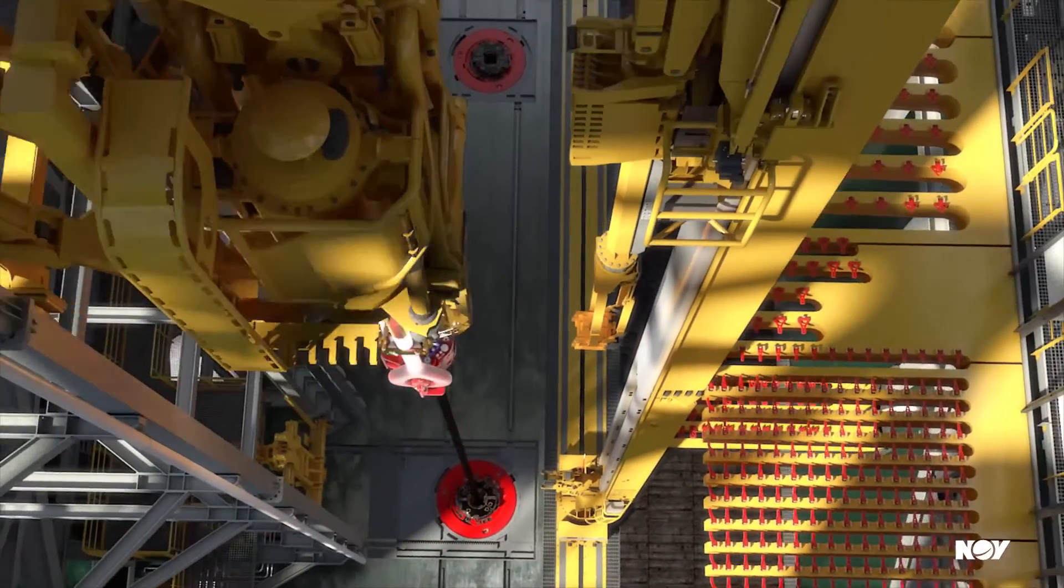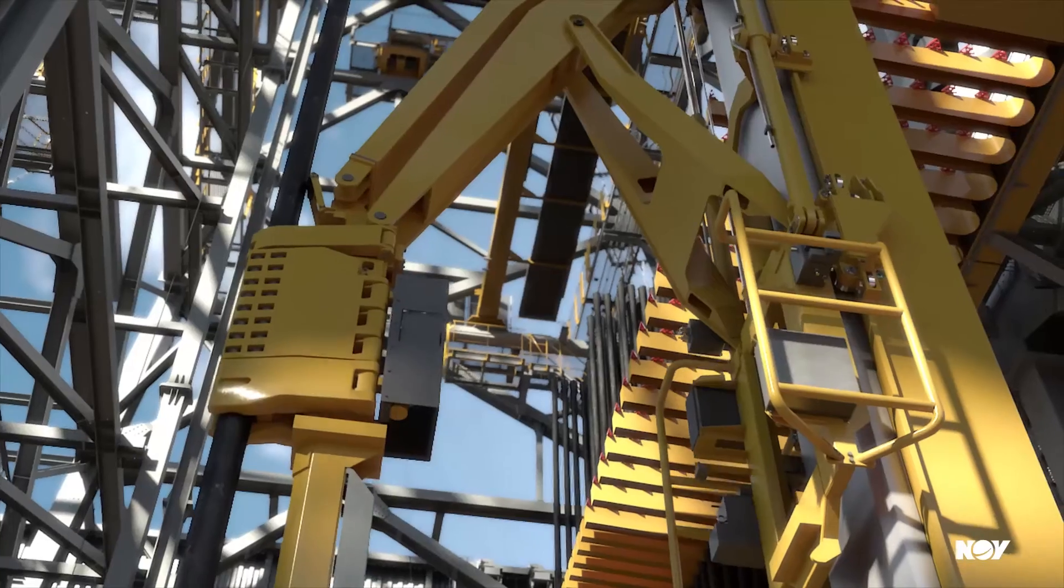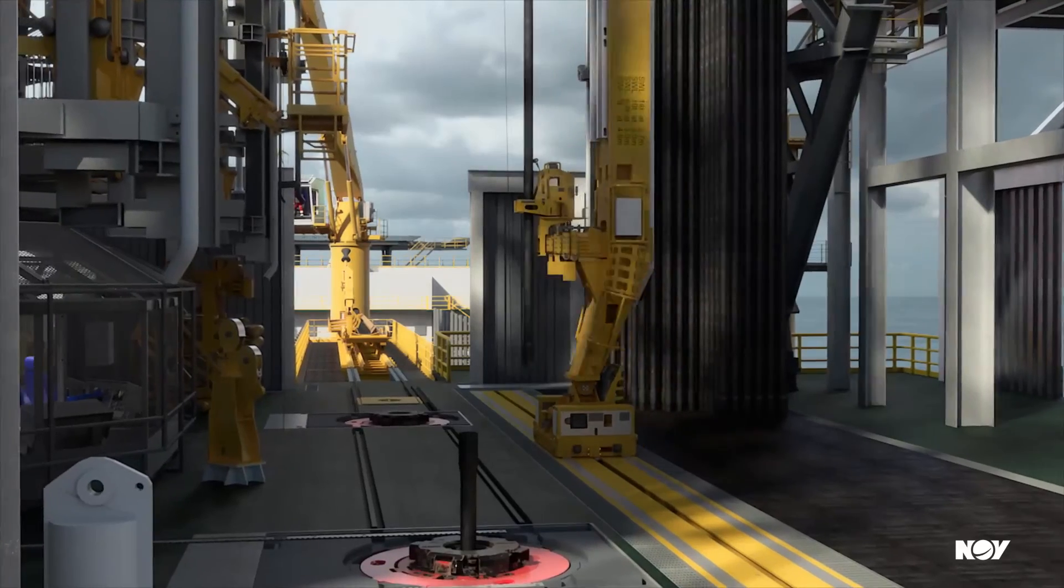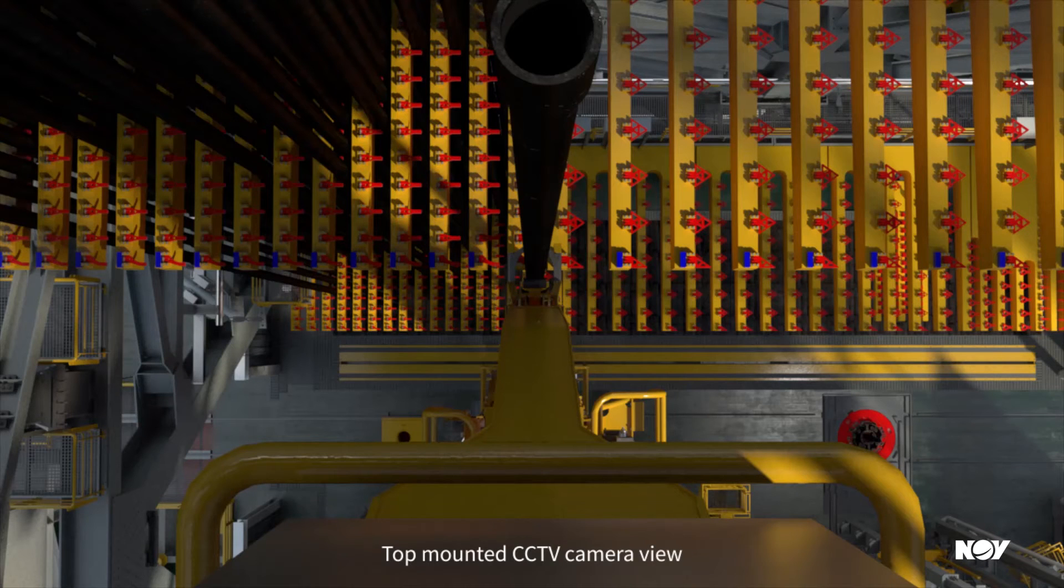This time, when the racker returns with a new stand, the sensor will confirm the latch position behind the column racker arm, letting the system know when it is safe to move even with the operator's obstructed top view.